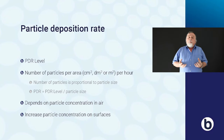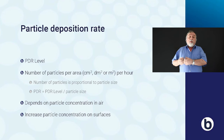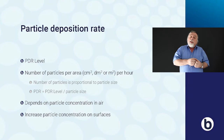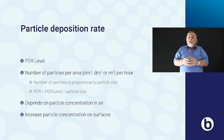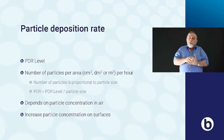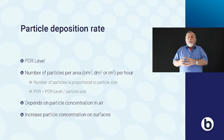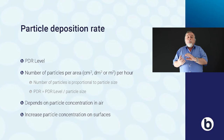Particle deposition rate is the number of particles larger than a particular size d in micrometers per area per hour. A particle deposition rate level is independent of particle size and gives you a general level of particle deposition in the clean room. It is expressed in number of particles per area in square centimeters, square decimeters, or square meters per hour. The number of particles that deposit is proportional to the particle size. The particle deposition rate can be found by dividing the particle deposition rate level by the particle size d.